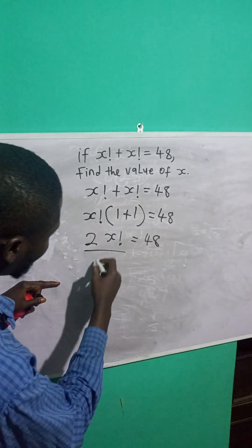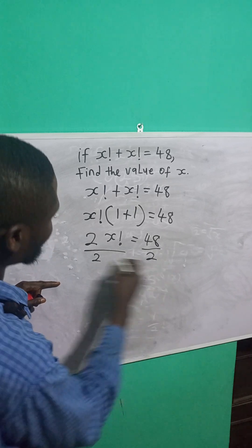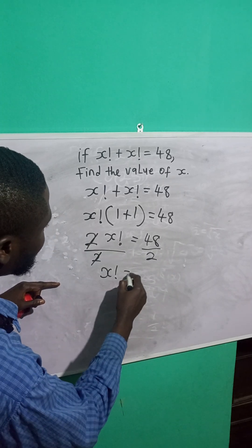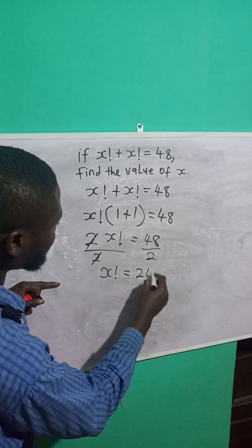So I'm going to divide both sides by 2. So this will cancel. I'm left with x factorial is equal to 48 divided by 2, which is 24.